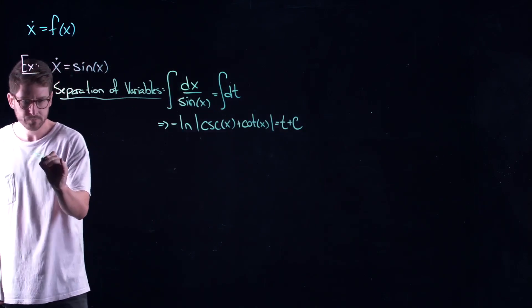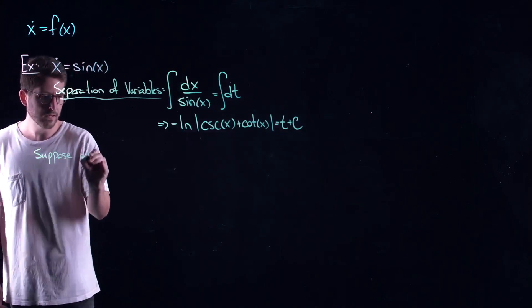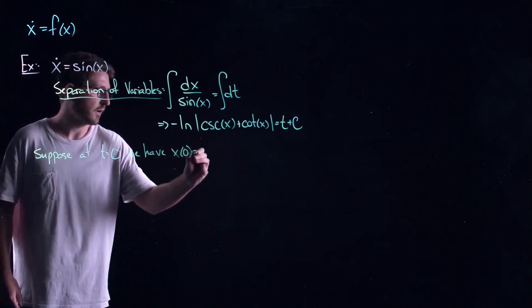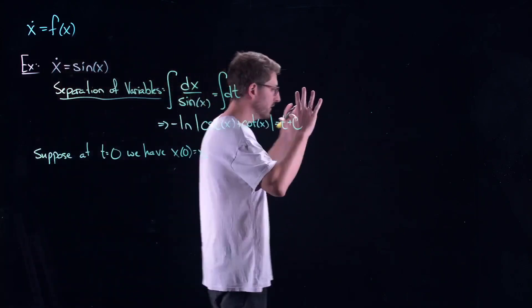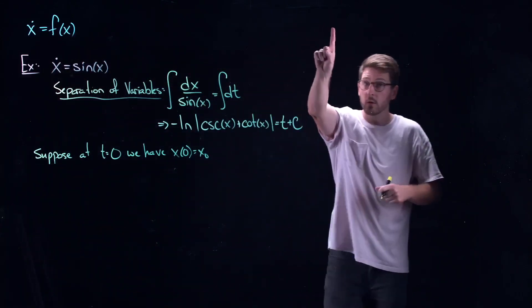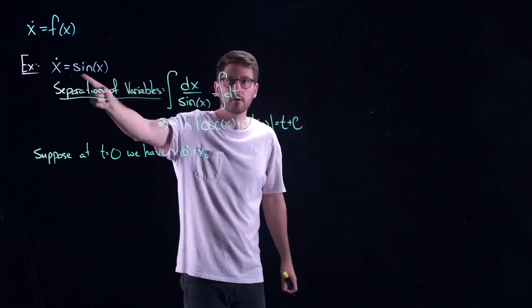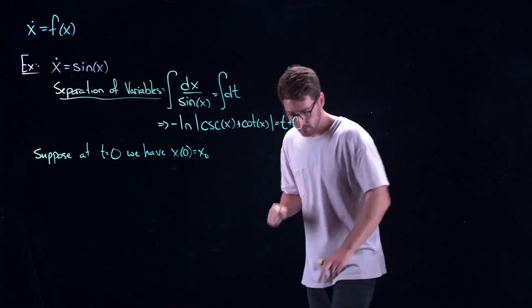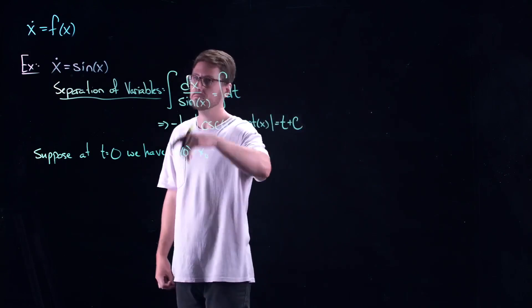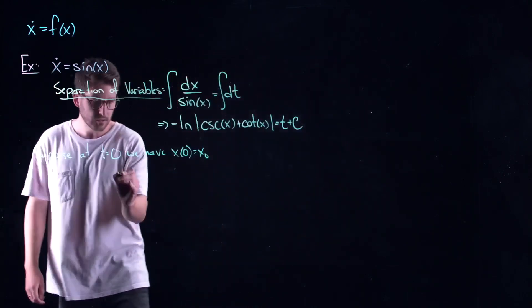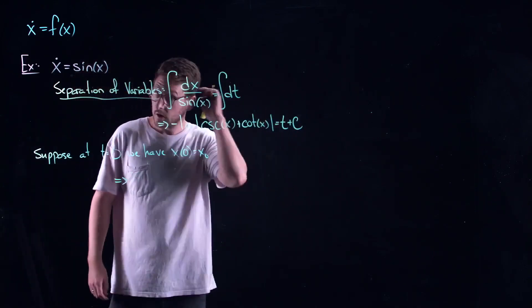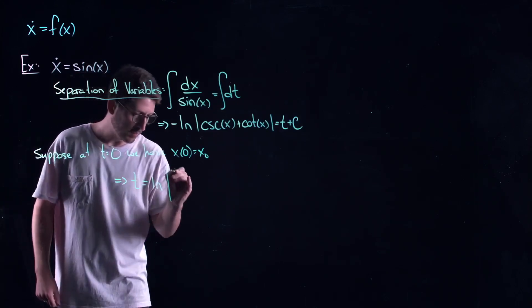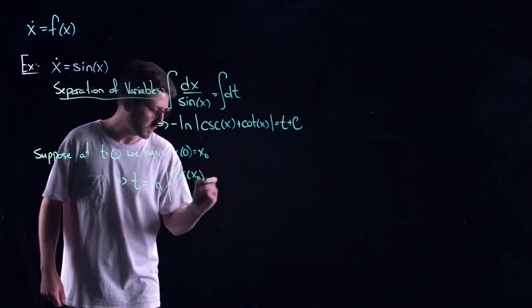That is truly awful to look at, but let's keep pushing. Suppose at t equal to zero we have x(0) equal to x-naught. Remember, differential equations come in two pieces: the equations that govern, and an initial condition — I need to know where the pendulum starts swinging. You can solve for c, the integration constant, and you get this truly awful-looking implicit curve.